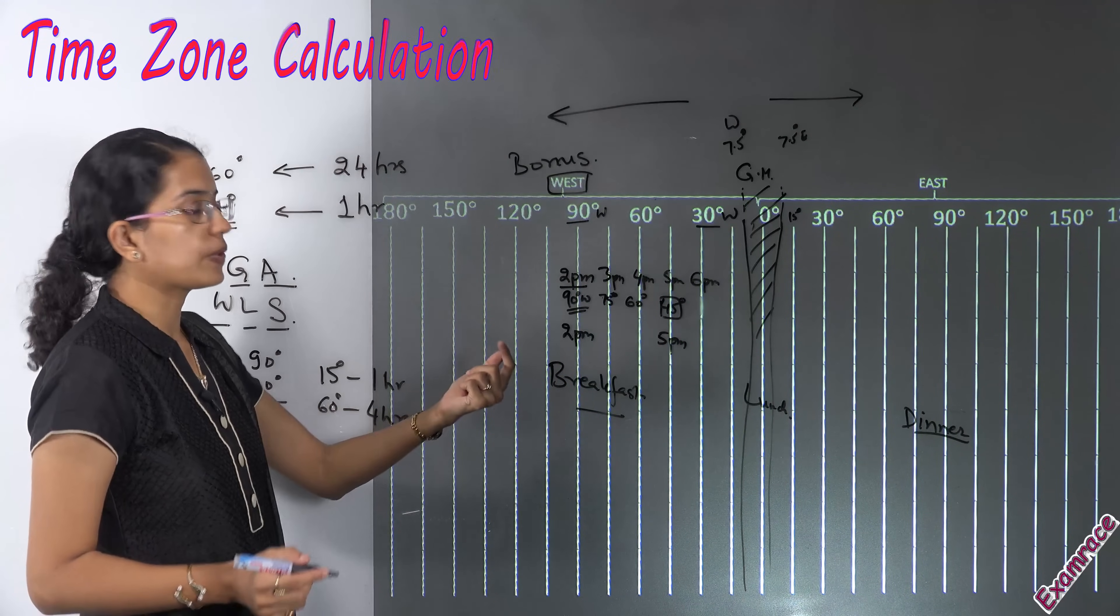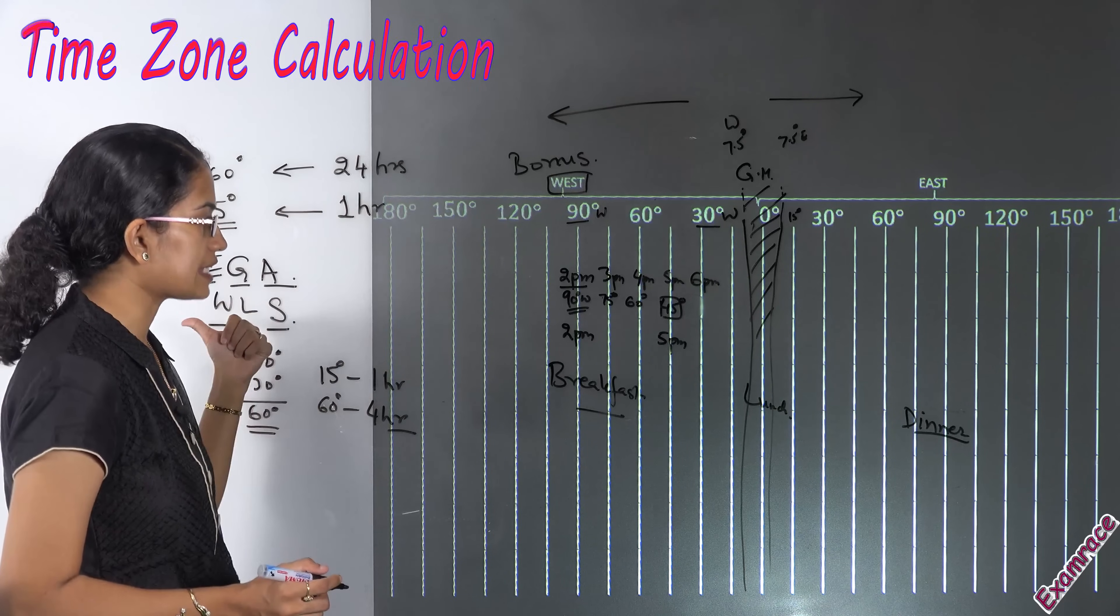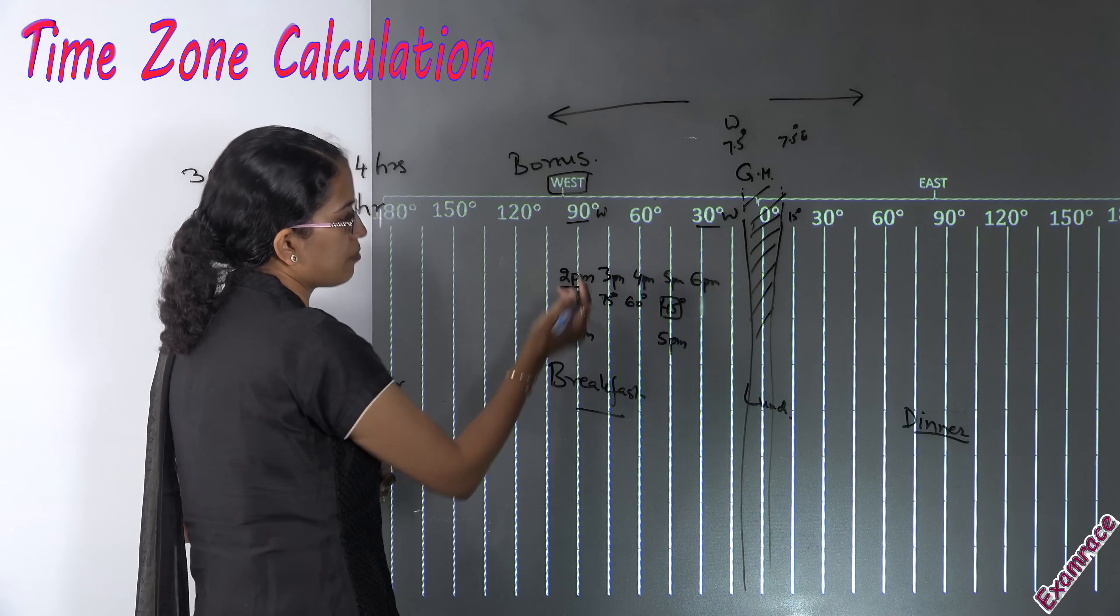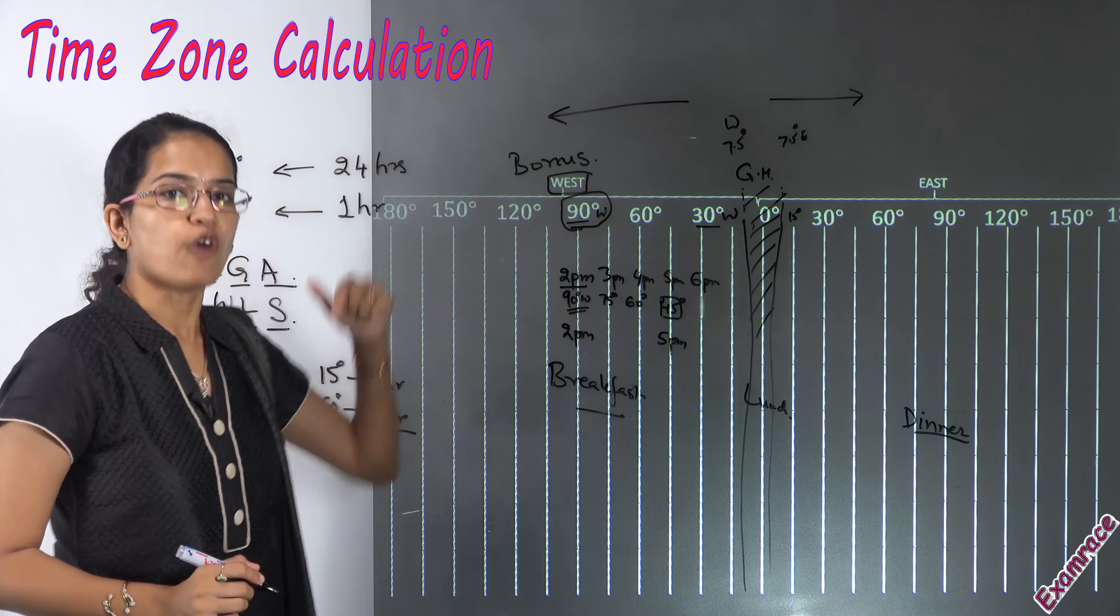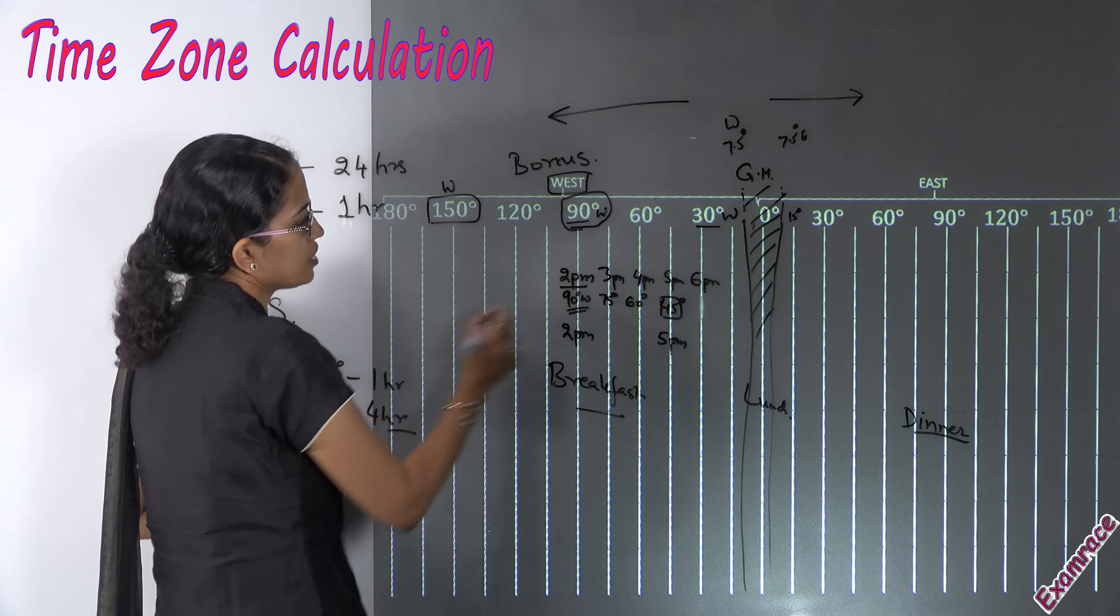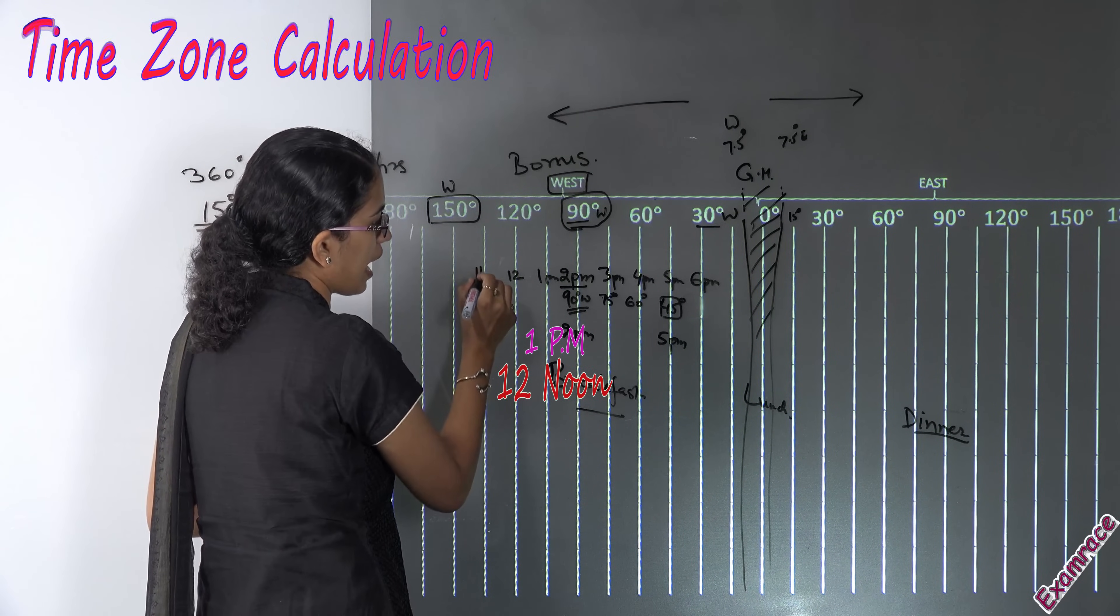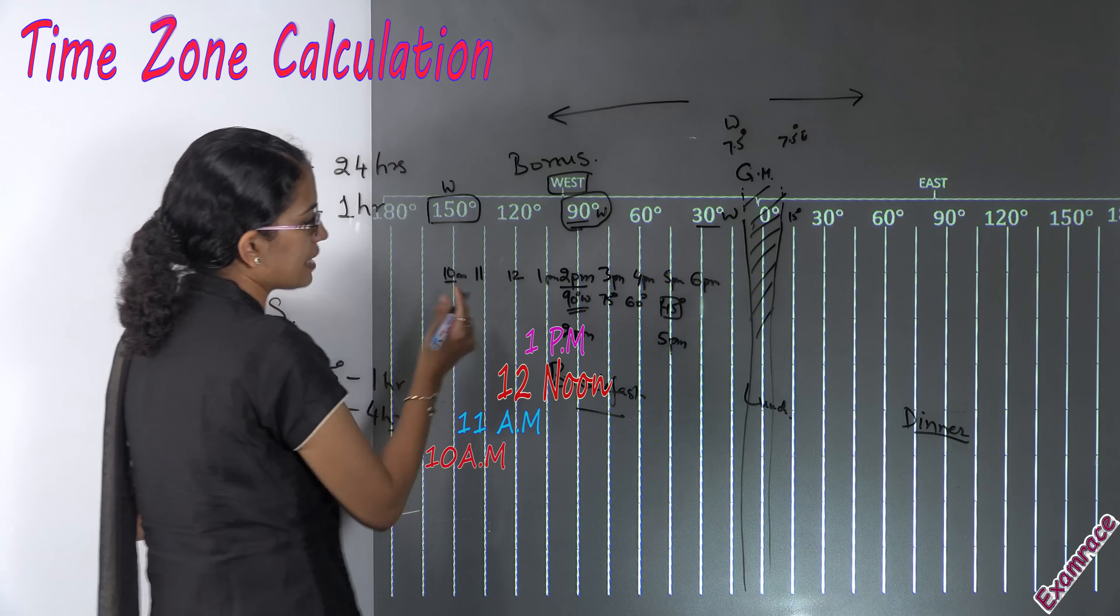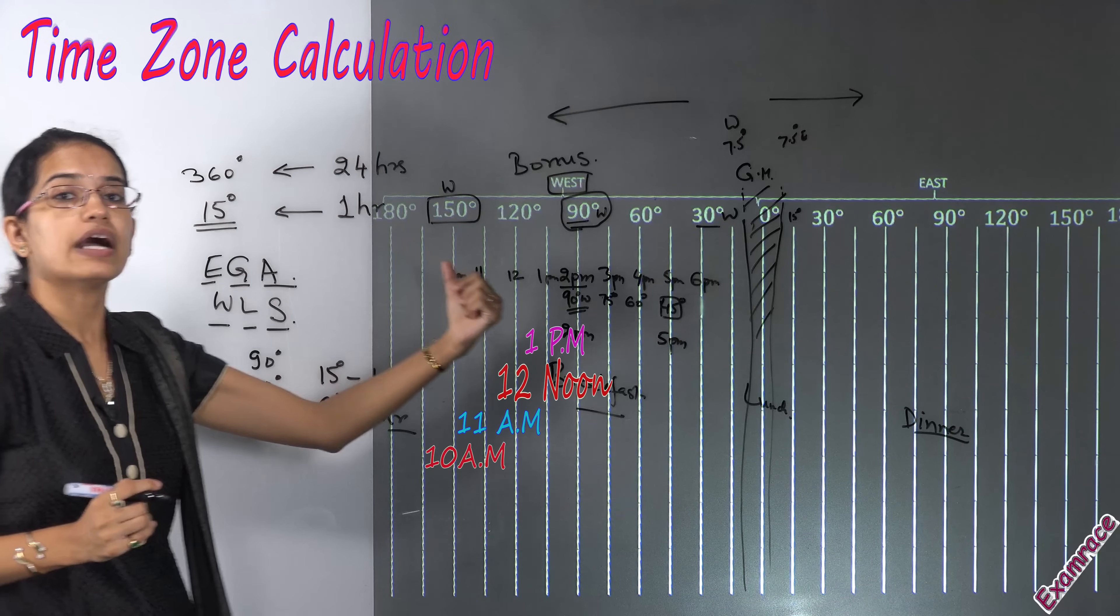Now in the same scenario let me move towards west. When I am moving towards west I am losing my day. So from the same question at 90 degrees west my time is 2 PM. What would be my time at 150 degrees west? So it would be 1 PM, 12, then 11 AM and 10 AM.